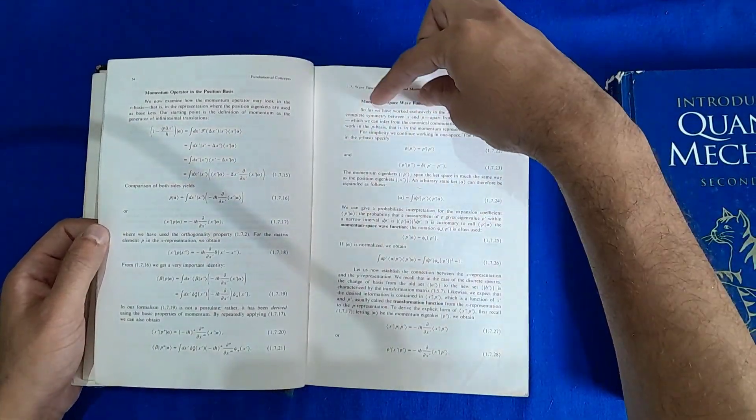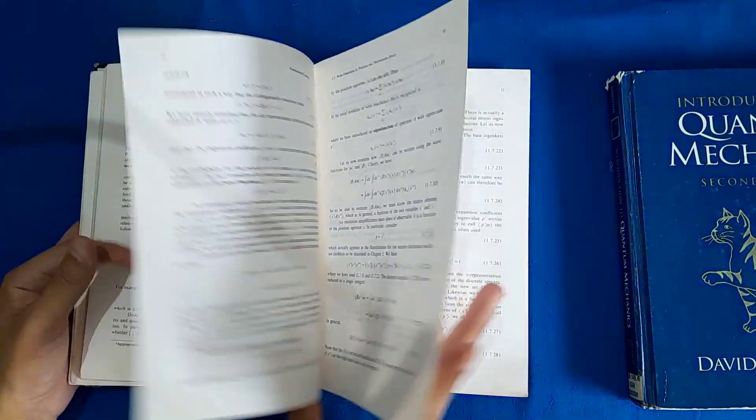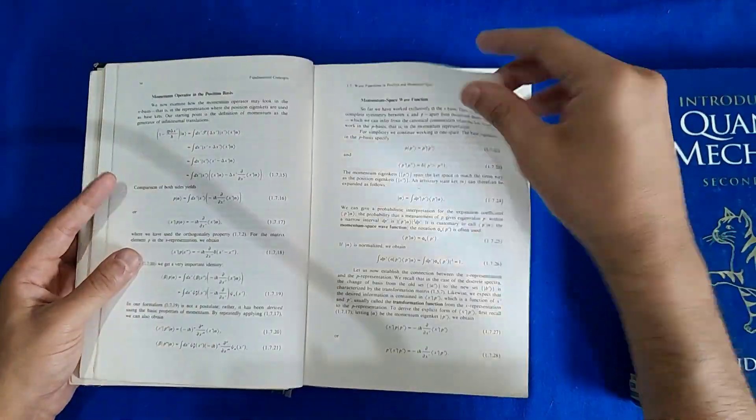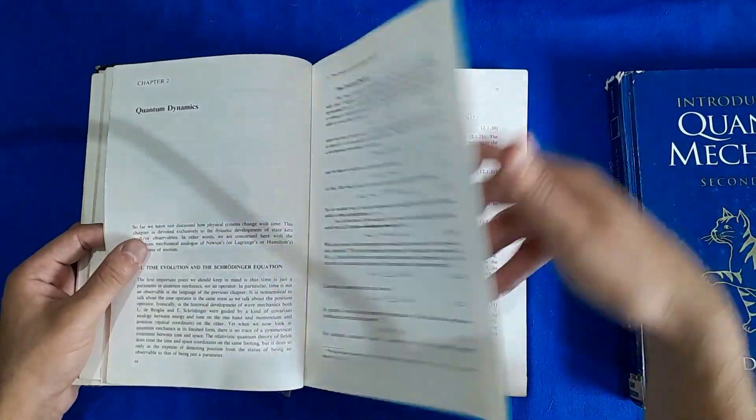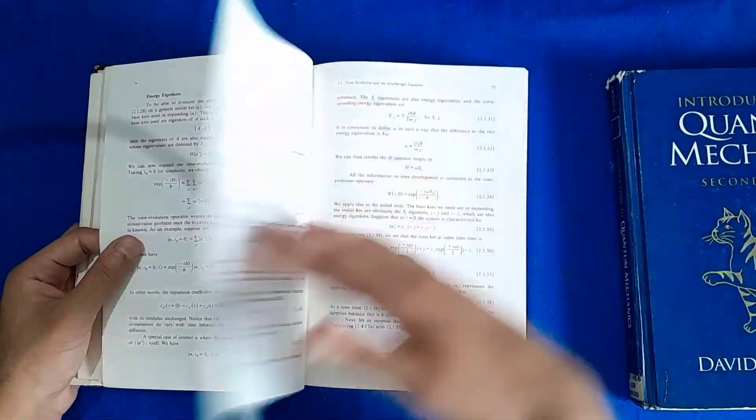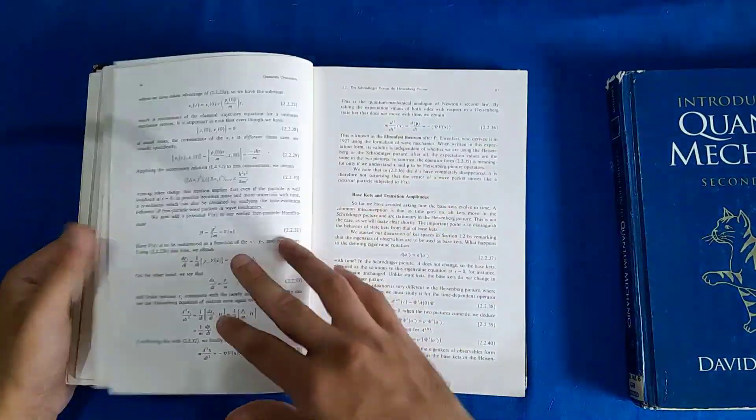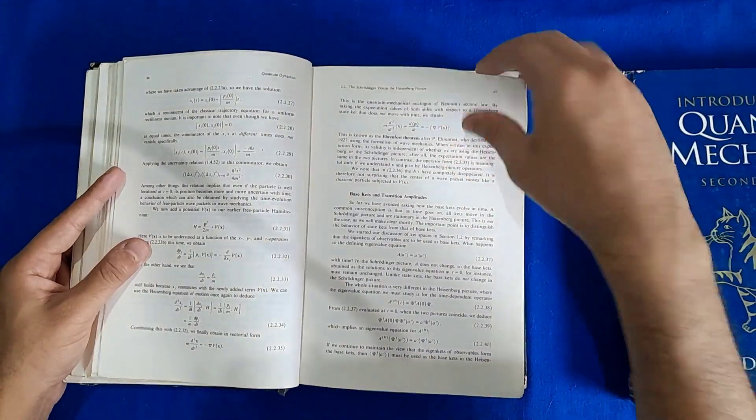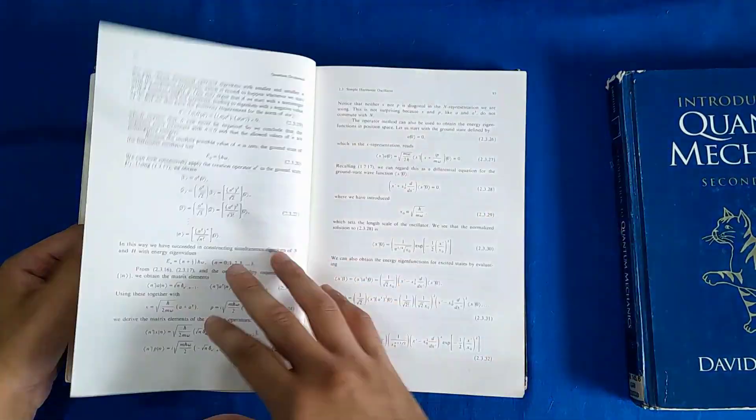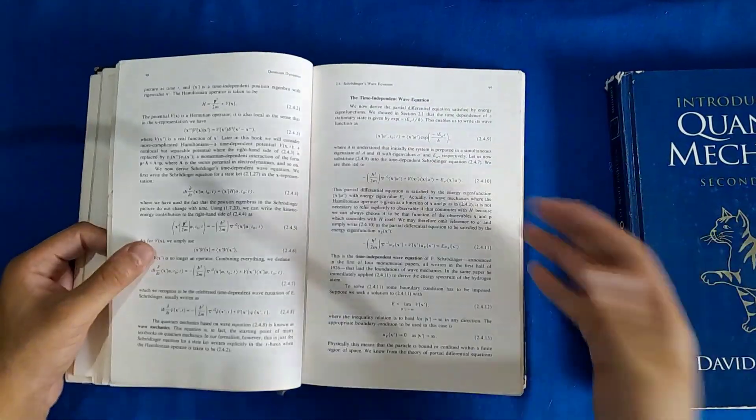They have covered this momentum representation, the space representing position space wave function and so on. But most of the calculations are done just taking the bracket notation and without them you realize that you don't really need to stick to any representation while solving all of these problems that you have been doing so far.